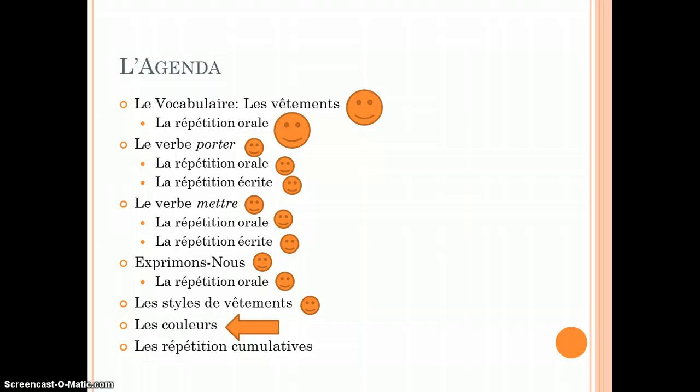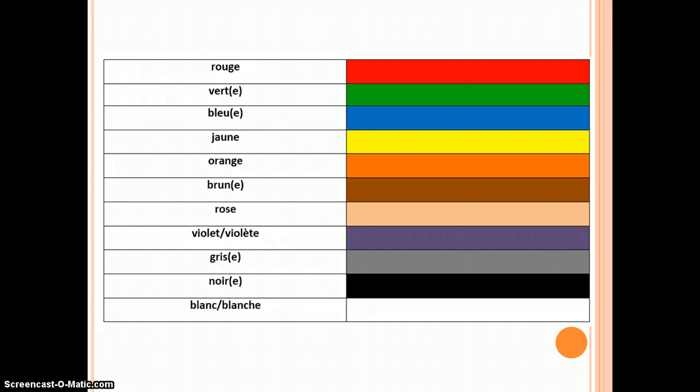Now let's look at how we say colors in French. Colors will always typically go after the noun. Rouge, verte, jaune, orange.